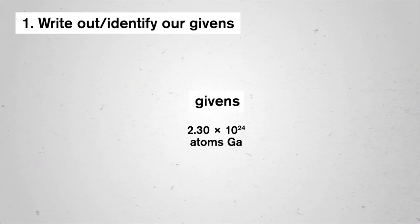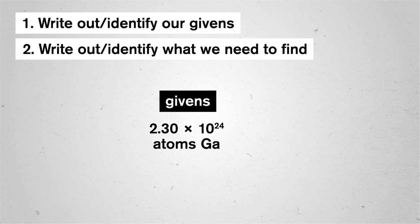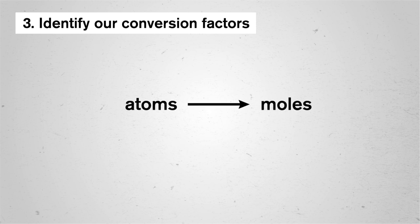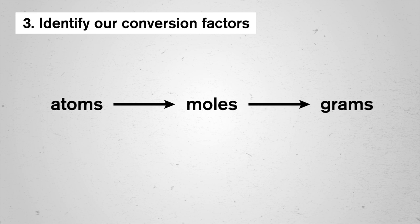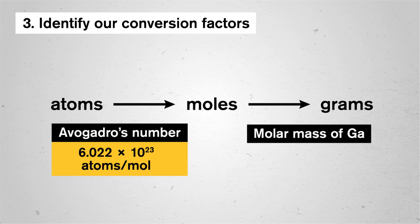Let's see how this would play out in an example. If we wanted to know how many grams are in 2.30 times 10 to the 24 atoms of gallium, we'd list our givens as normal and identify what we need to find — the amount in grams. When we pick out our conversion factors, we'll need a first one to convert from atoms to moles, and then a second one to convert from moles to grams. For the first, we can use Avogadro's number: 6.022 times 10 to the 23rd atoms per mole. For the second, we can use the molar mass of gallium, which is about 70 grams per mole if we round.